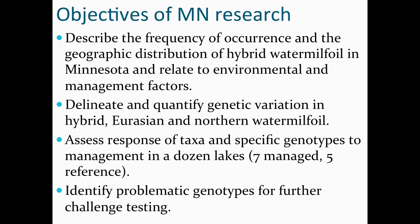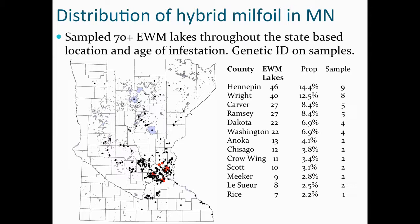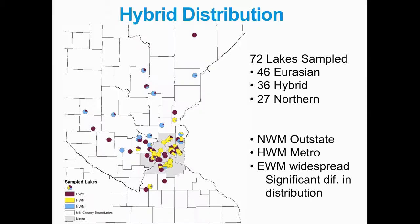For characterizing the distribution, we originally sampled 62 lakes, and in 2019 we picked up additional lakes for a total of over 70 lakes throughout the state. We selected these based on proportional occurrence — sampling more in the metro where most infestations occur, but also including outstate regions. We collected plants on a stratified basis and obtained genetic identifications, so we know exactly what taxa and what genotype is in each lake.